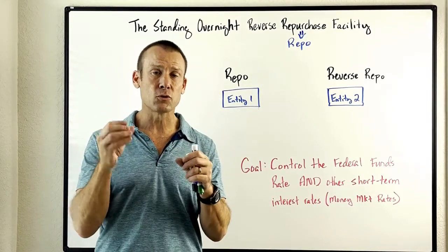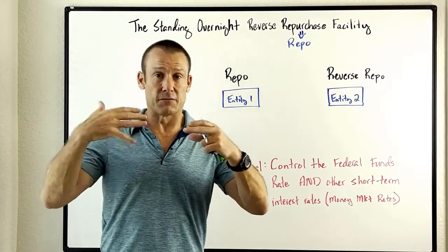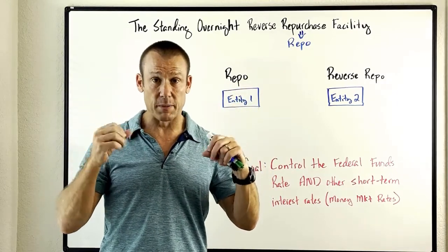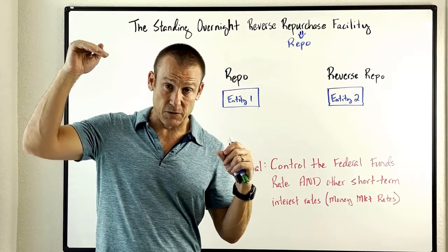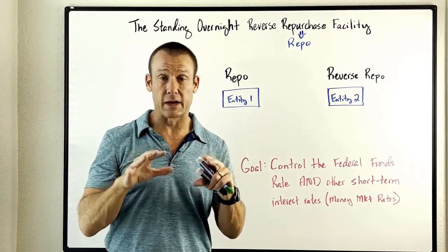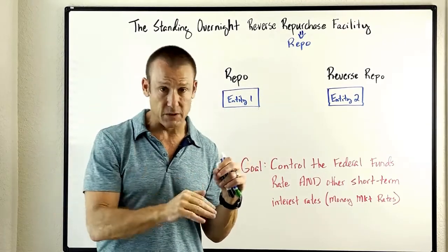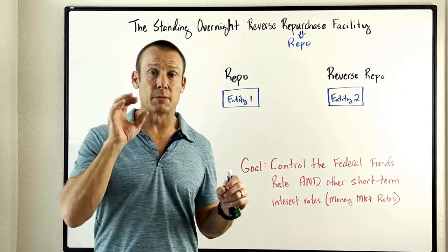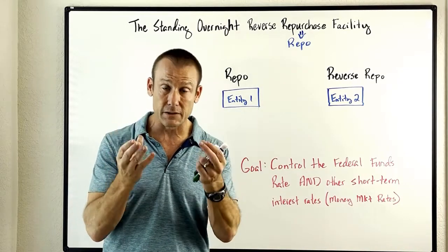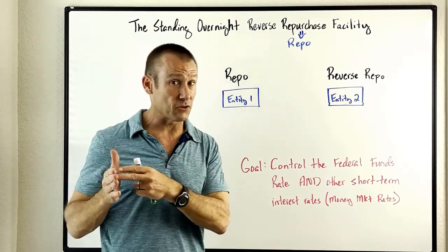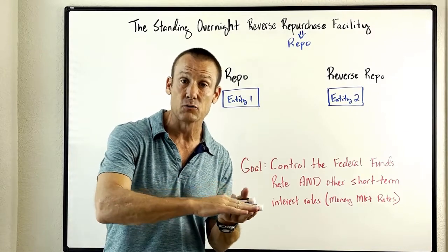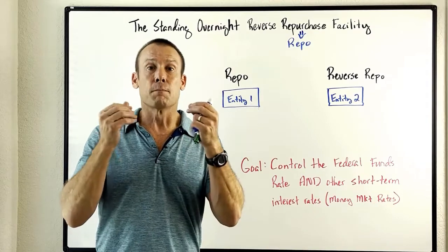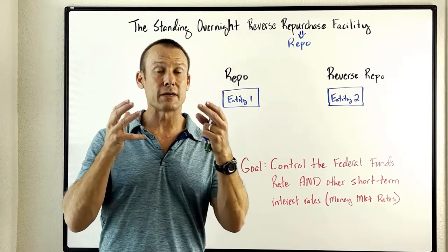In 2008, the Fed started purchasing all of these assets from commercial banks, crediting their reserve balances at the Fed, and the federal funds rate went right down to zero. They stayed at zero all the way to 2015. That year was known as liftoff — when the Fed, after seven years, decided to try to raise the federal funds rate using a new tool.